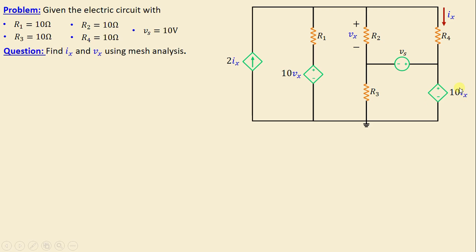The question is to find the current ix and the voltage vx using mesh analysis. The current ix is the current through resistor R4, and the voltage vx is the voltage across resistor R2. Let's begin by defining the number of meshes in this network. It's evident that there are four meshes: this is mesh 1, mesh 2, mesh 3, and mesh 4.